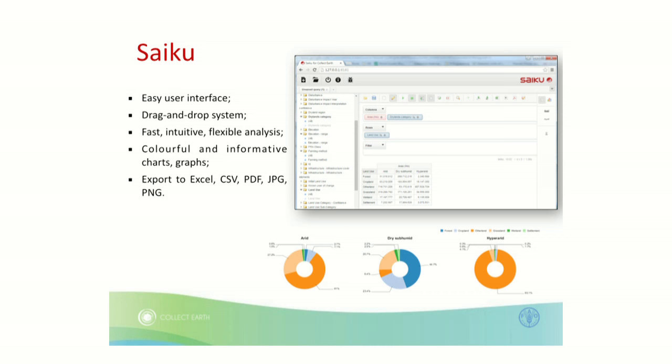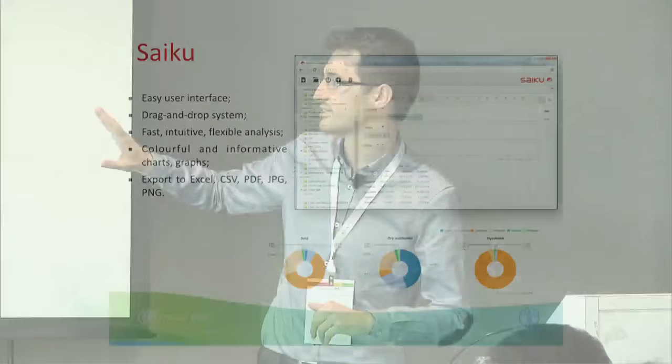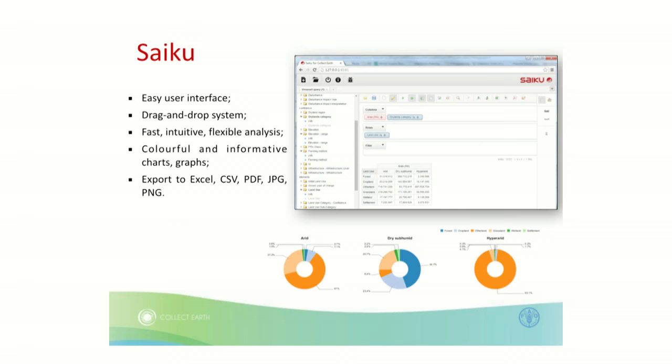Once you collect all this information, you have the option to run Saiku directly from CollectEarth. It's a tool for data analysis that brings all the attributes from your survey into a very easy interface — basically drag and drop. In this case it's a dry land assessment: I want to see land use by aridity zone, and then it brings colorful, beautiful graphs you can export in many different formats. And the best thing is it's free.